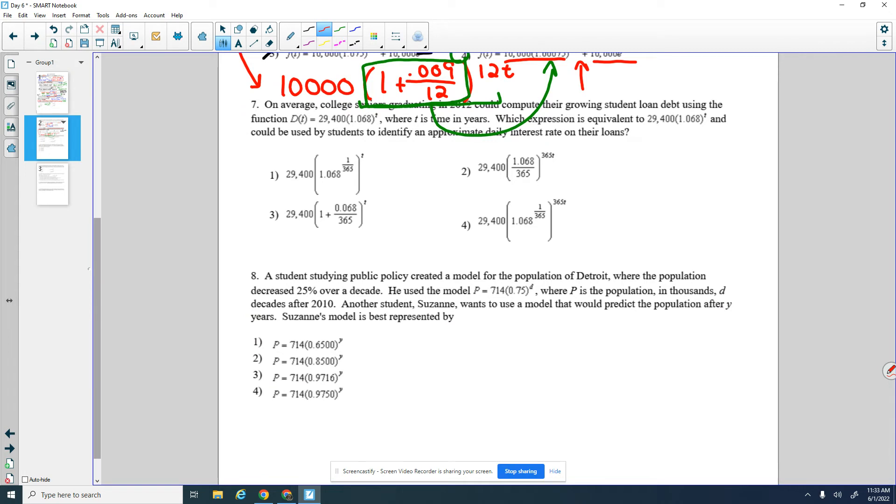The next one says, on average, college students graduating in 2012 could compute their growing student loan debt using the function D of T equals $28,400 times 1.068 to the T, where T is time in years. So that's a function showing years. Which expression is equivalent to, so we want something that is the same thing as that function we have, and could be used by students to identify an approximate daily interest rate on their loans. So our formula has time in years. If we want to go to days, we want to do something with a 365, because that's how many days are in a year.